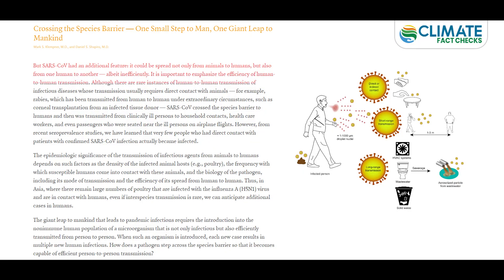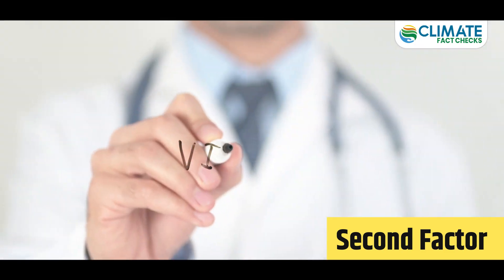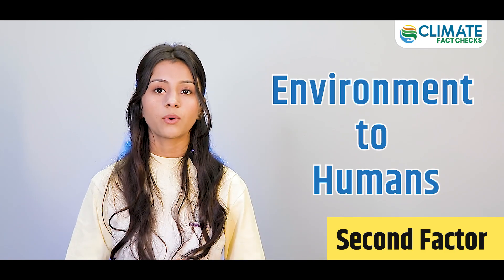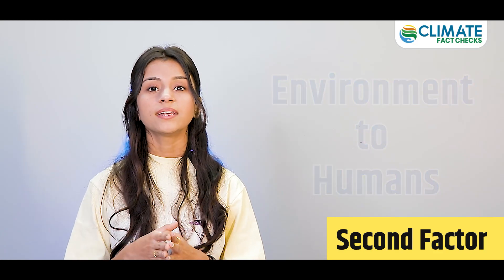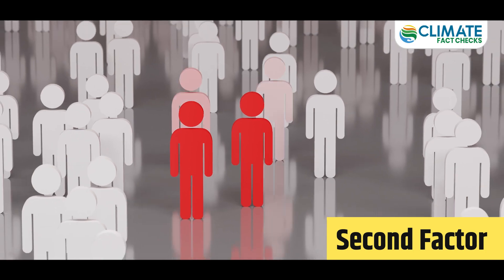Several factors need to be fulfilled for a virus to transmit amongst humans. The first factor is the species barrier, which is the natural system that prevents disease from spreading from one type of animal or plant to another. The second factor is that even if there is a possibility of viral infection spreading from the environment to humans, there is minimal potential for it to spread from one person to another.